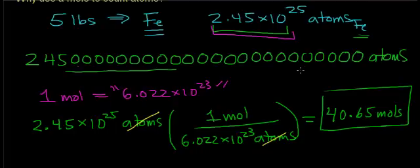In this case, iron. Now, is that just because we're lazy? It might be, but it also is easier to represent large numbers using a much smaller quantity. In this case, these two numbers, 2.45 times 10 to the 25th atoms, represents the same number of atoms that 40.65 moles of atoms represents.